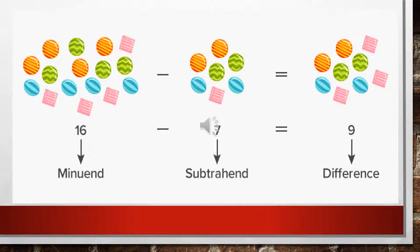After 16, when we have subtracted 7, there are 9 candies remaining with us, which means 9 is the difference in this slide. We have subtracted 7 out of 16 and got the answer 9. So, the total number is called the minuend, the number we are going to subtract is called the subtrahend, and the answer we get is called the difference.